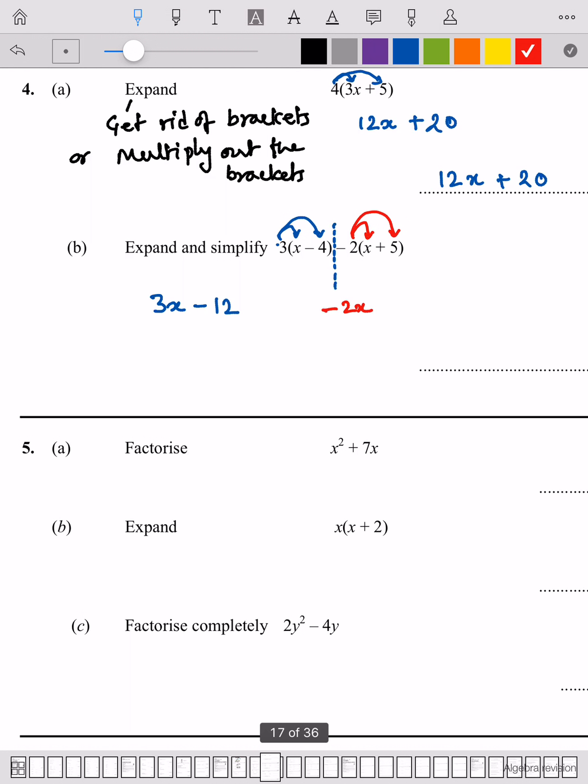Now you just collect your like terms. So you can see 3x and take away 2x is just x, whereas negative 12 and negative 10 is negative 22. So your final answer is x minus 22.